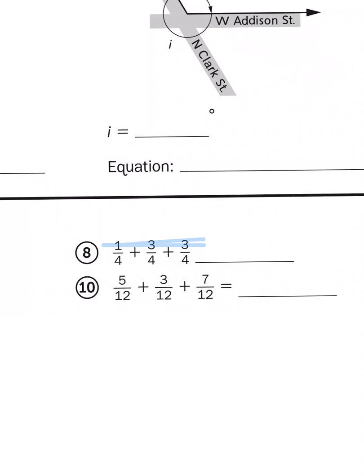So I can ignore the fours and just think of one plus three plus three. Now, of course, one plus three plus three is going to give me seven. Seven what? That would be seven-fourths.